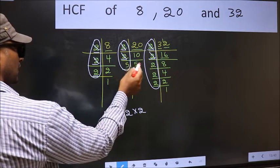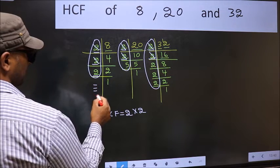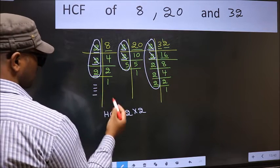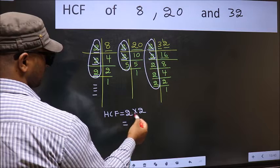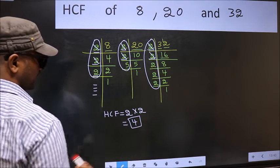So no need for us to check in the other place. No more numbers have been left out. So our HCF is 2 times 2, which equals 4. 4 is our HCF.